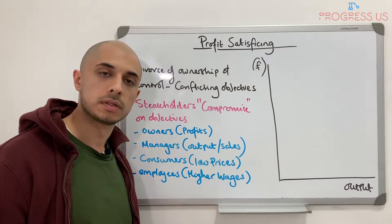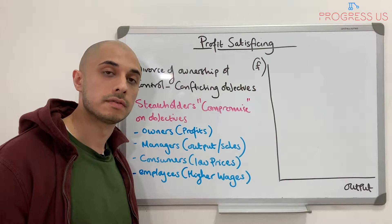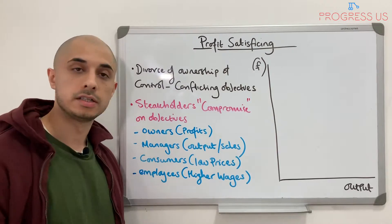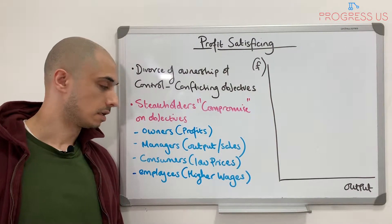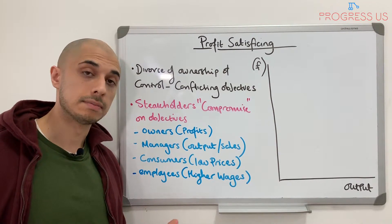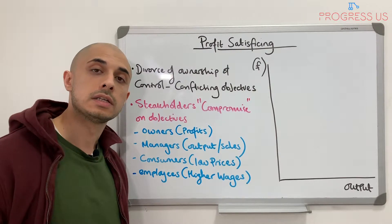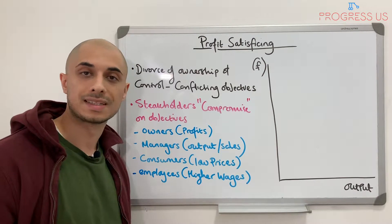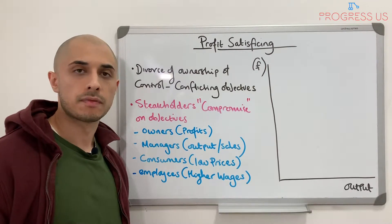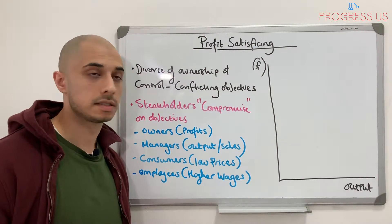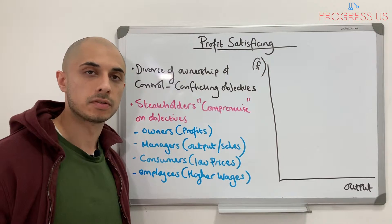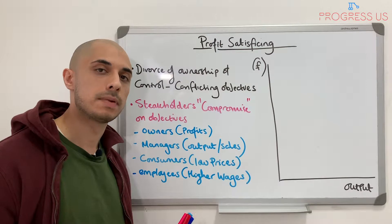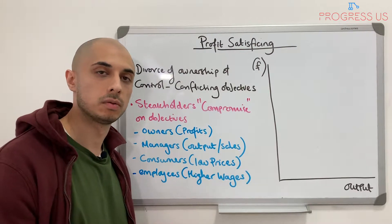It's important to understand who the stakeholders are in a firm. They can include the owners of the firm, the managers or directors, and also consumers and employees. It's essentially anyone who has an interest in the firm itself. Profit satisficing is really about trying to understand the divorce of ownership and control, and what impact that has on the different stakeholders.